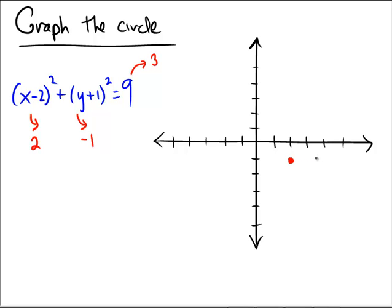So, counting 1, 2, 3 in each direction from the center: 1, 2, 3... 1, 2, 3... 1, 2, 3... and 1, 2, 3. Now,